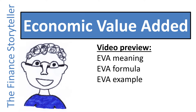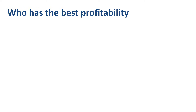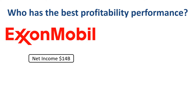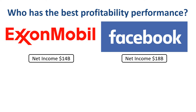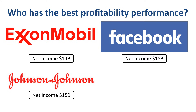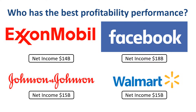To understand the need for a concept like Economic Value Added, let's look at some profitability numbers. Which of these companies has the best profitability performance for the year? ExxonMobil with a net income of $14 billion, Facebook with a net income of $18 billion, Johnson & Johnson with a net income of $15 billion, or Walmart with a net income of $15 billion. Which one would you vote for?